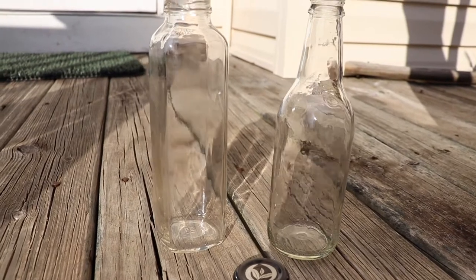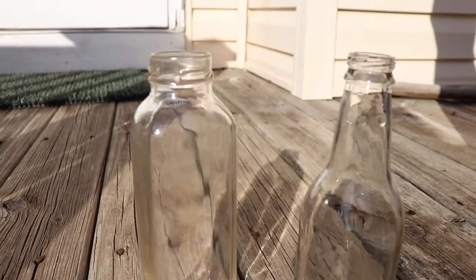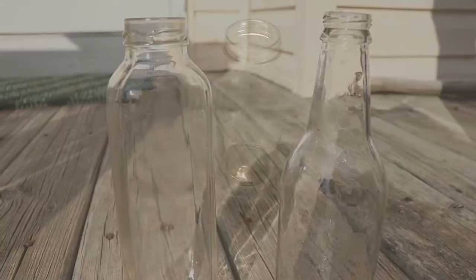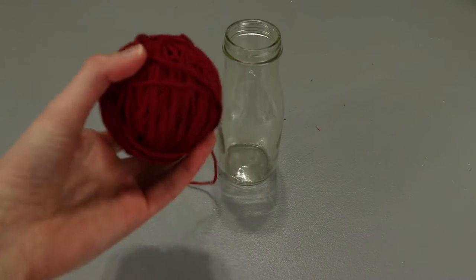You could also opt for a plastic container, which has the advantage that it won't break if it gets dropped, but I personally love the look of glass jars. Once your container is ready, we need to gather some yarn, string, or rope for our macrame hanger.